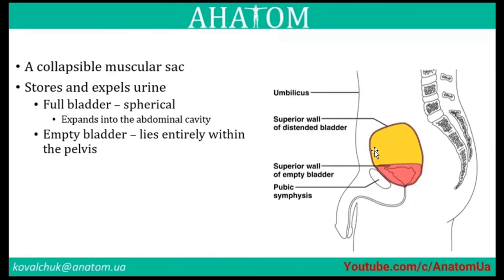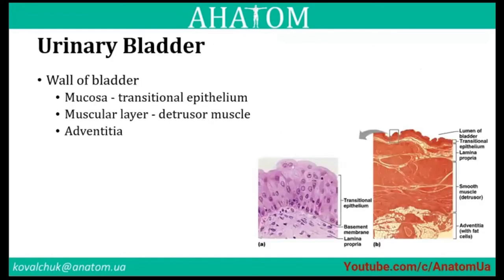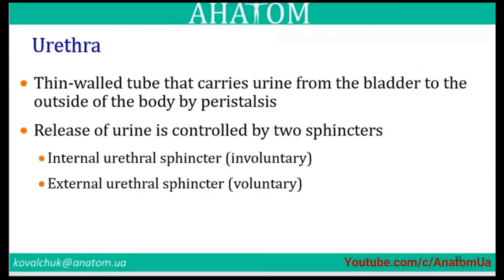When full, the bladder expands into the abdominal cavity; when empty it stays in the pelvic region. The urinary bladder walls in histology show mucosa, muscle, and adventitia. The urethra carries urine from the bladder to the outside of the body by peristalsis; release of urine is controlled by two sphincters — internal and external.